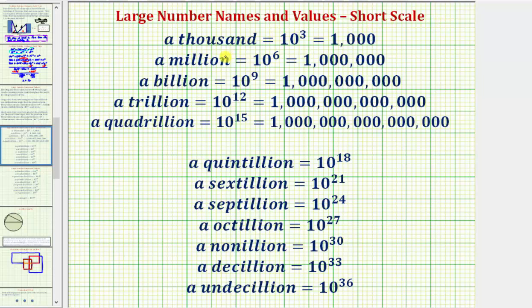Let's begin with a thousand, which equals 10 cubed, or 10 raised to the power of three, which written out would be one followed by three zeros. Notice how the number of zeros is the same as the exponent on 10.